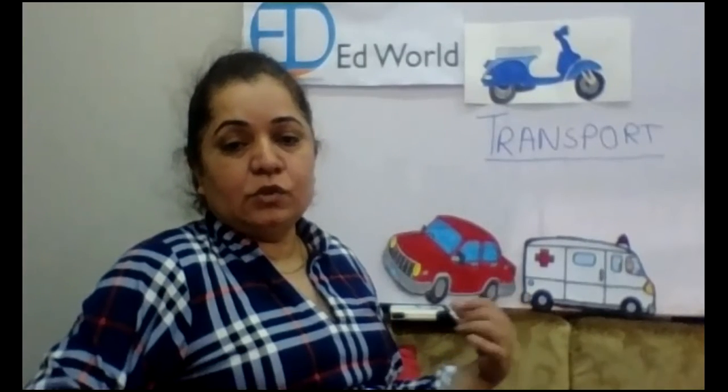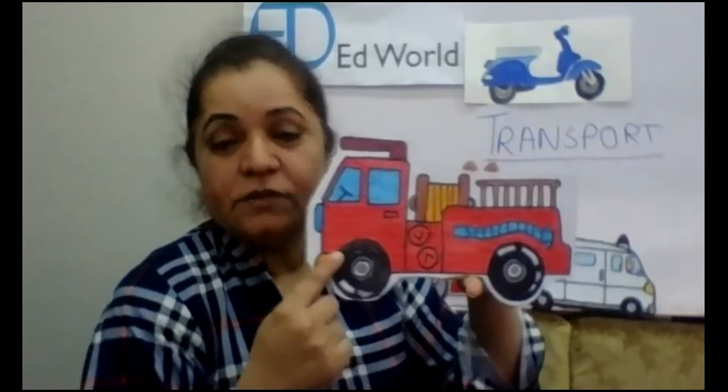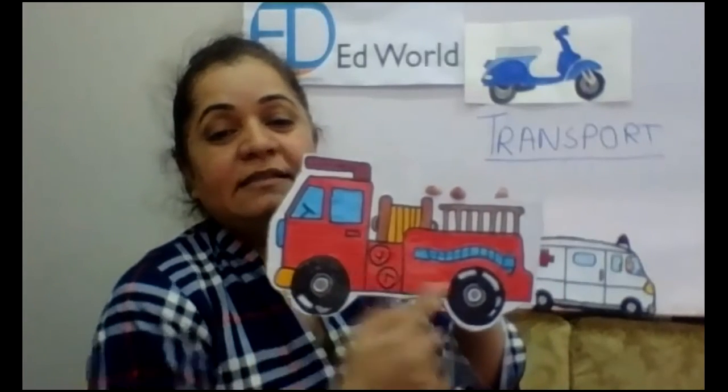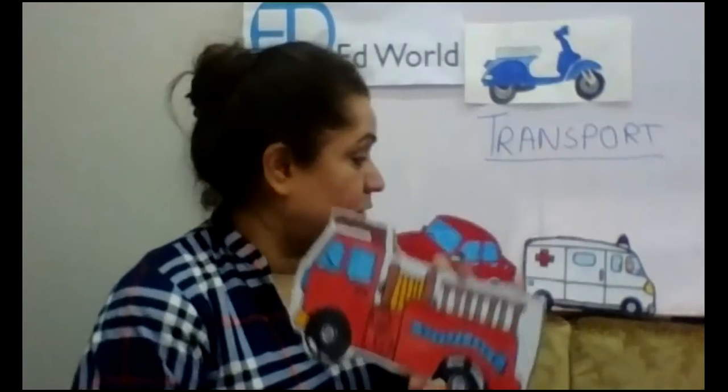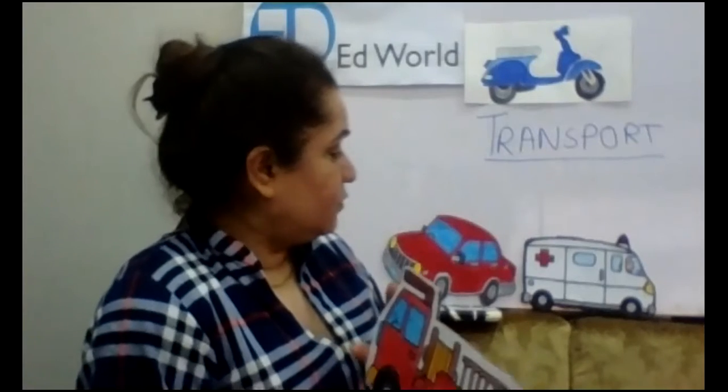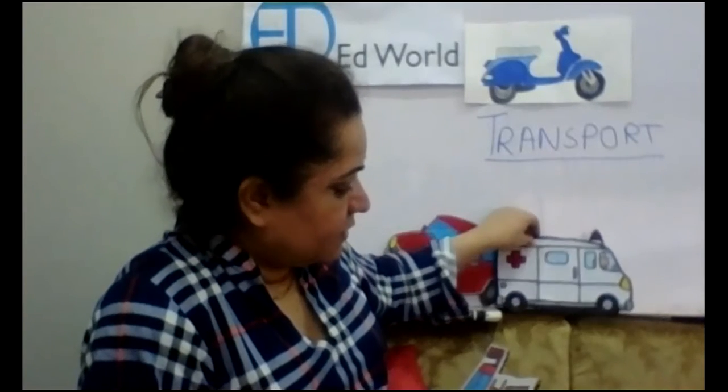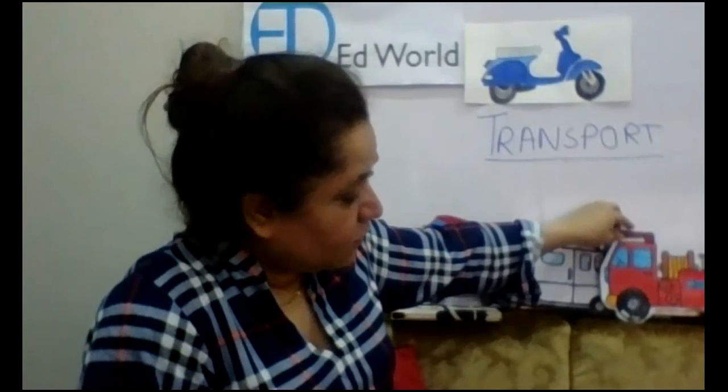The common thing you can notice is the wheels — on the road you travel on wheels. If you see a siren and a red truck with water pipes, that is a fire engine, which also comes under land transport. It has wheels and responds to fire emergencies. So ambulances and fire trucks are both very important emergency vehicles in our daily life.